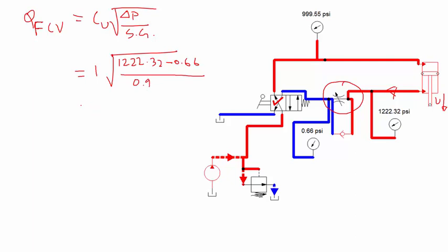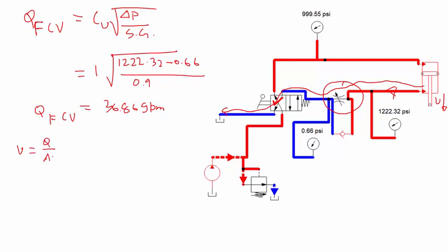I have calculated the flow through the flow control valve to be 36.86 gallons per minute, coming from the rod end and going to the reservoir. The velocity I can simply calculate as v = Q / A, so I plug in 36.86 gallons per minute divided by the area. This rod-end area I obtained from the Automation Studio simulation — it will be given in the question, either as a diameter or as a known cylinder property.